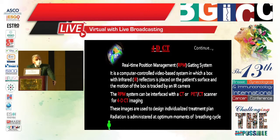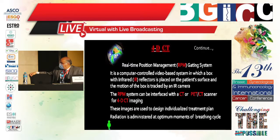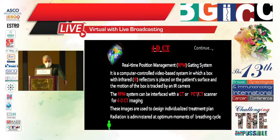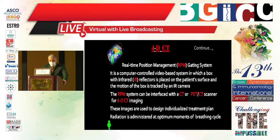The 4DCT real-time position management (RPM) gating system is a computer-controlled, video-based system in which a box with infrared reflectors is placed on the patient surface and the motion of the box is tracked by an infrared camera. The RPM system can be interfaced with a CT or PET-CT scanner for 4DCT imaging. These images are used to design an individualized treatment plan, and radiation is administered at optimum moments of the breath cycle.